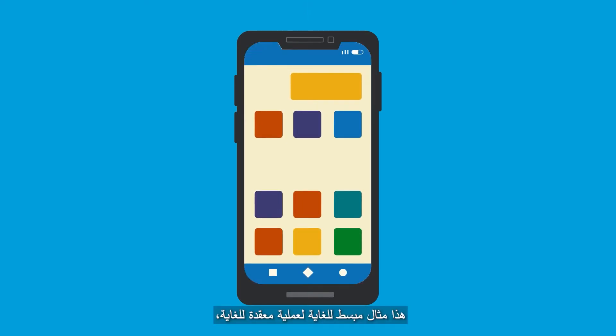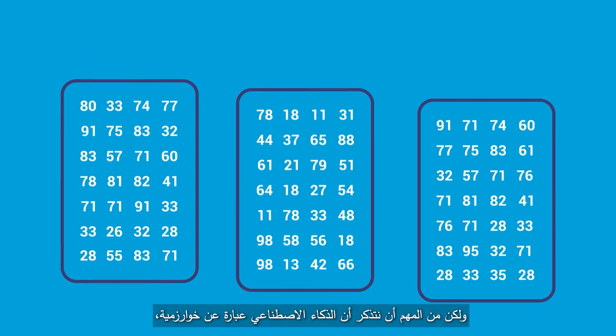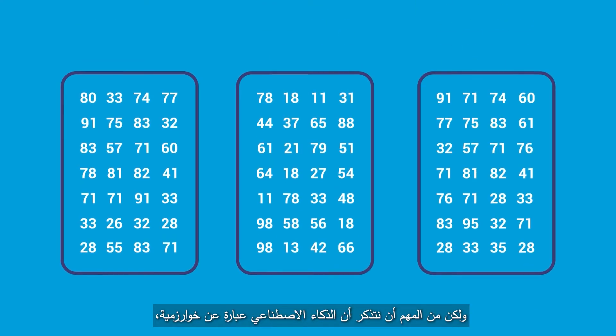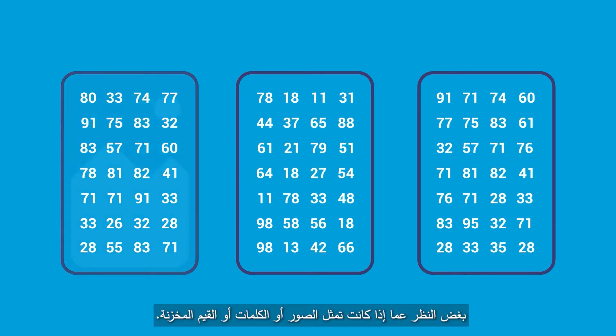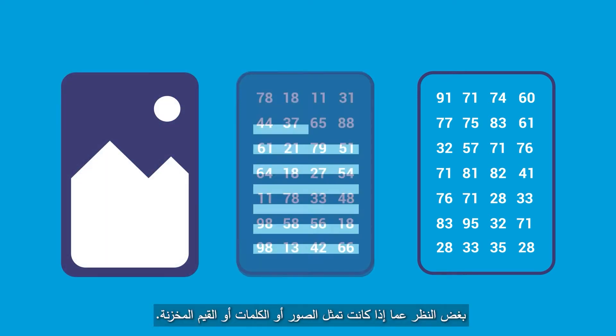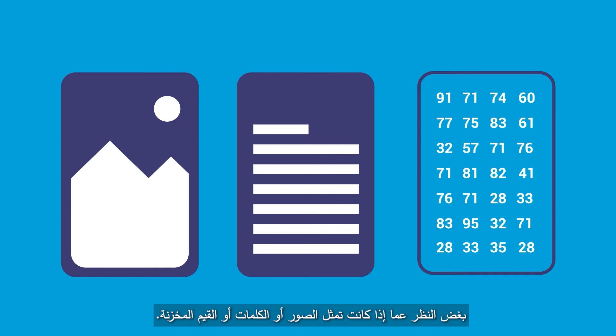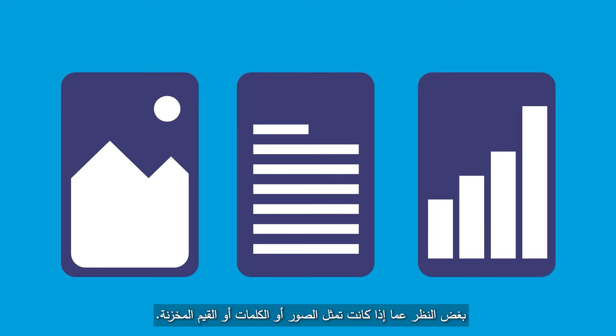This is an extremely simplified example of a highly complex process. But it is important to remember that AI is an algorithm and it only deals with numbers, no matter if they represent images, words, or stock values.